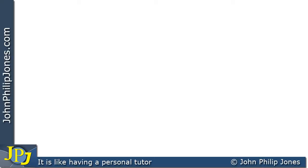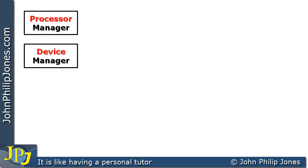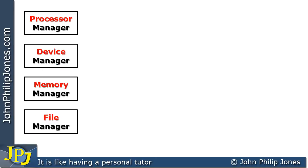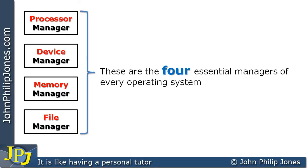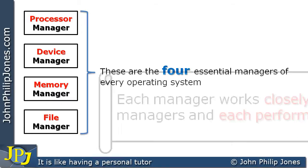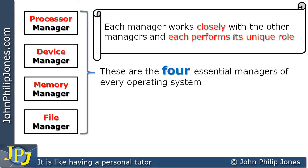Early in the playlist we saw that operating systems have four managers: the process manager, the device manager, the memory manager, and the file manager. These are the four essential managers of every operating system. We have seen that each manager works closely with other managers and each manager performs its own unique role.